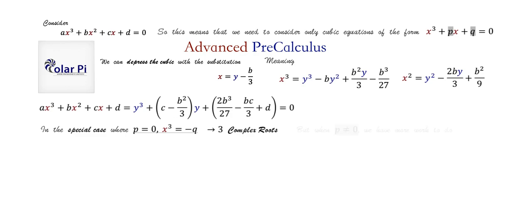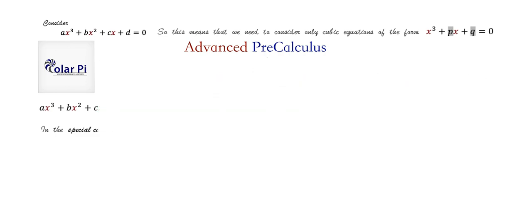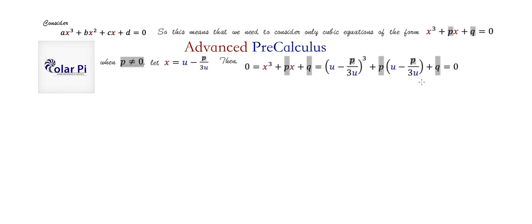When p ≠ 0 we have more work to do. Let's make the substitution x = u - p/(3u) into the depressed cubic. In place of x we substitute u - p/(3u) throughout, and after boring algebra and simplifying, we get this expression.